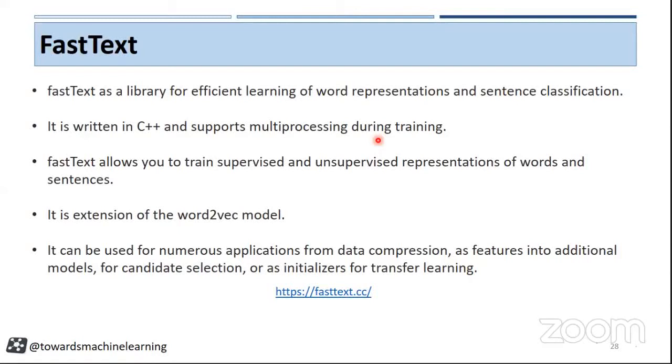It supports multiprocessing during training and has both supervised as well as unsupervised representation of words. If you see the implementation of FastText, we can say that it is an extension of the Word2Vec model.